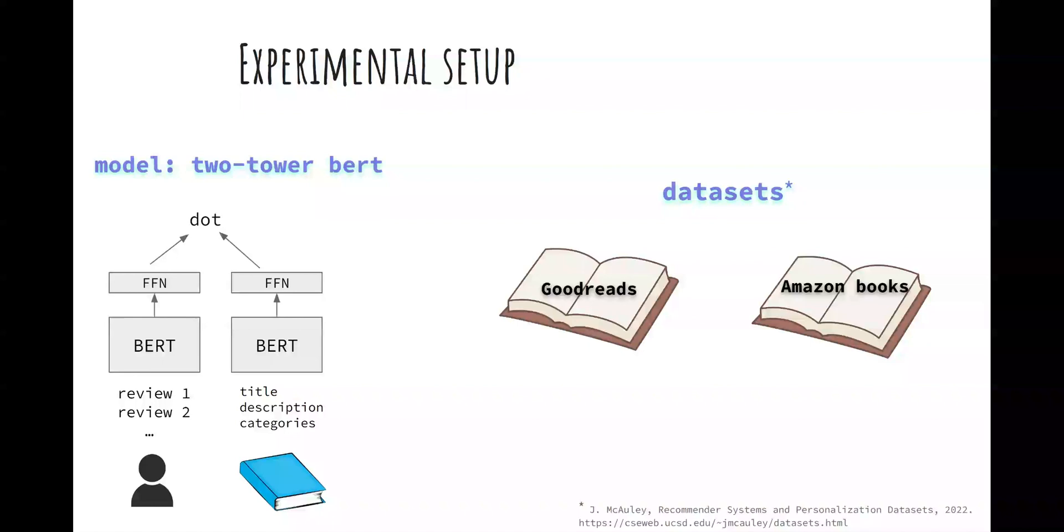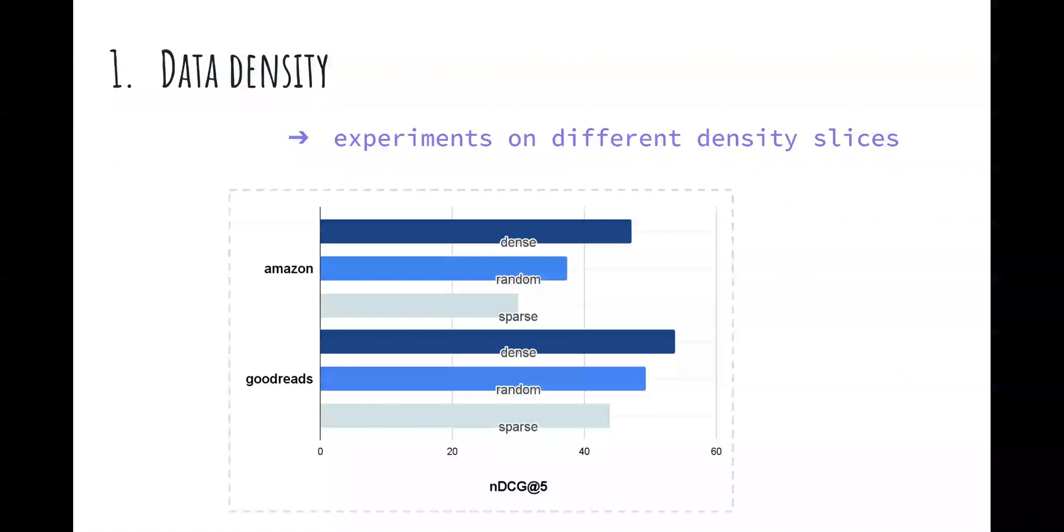All results are obtained using an end-to-end trained two-tower BERT model which predicts the recommendation score as a dot product between user and item contextualized representations. We report results on two book review datasets: Goodreads and Amazon.